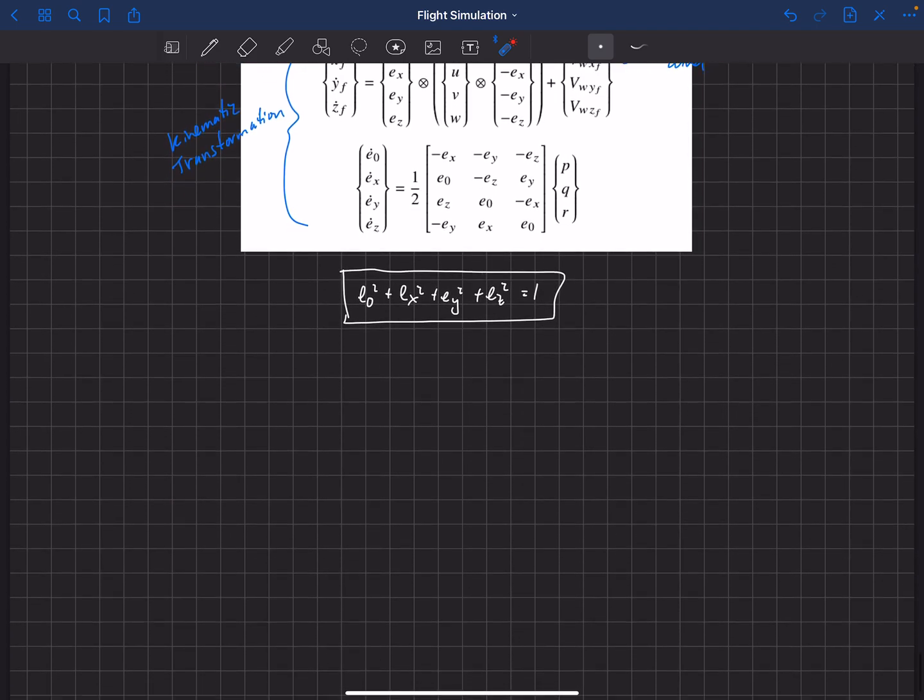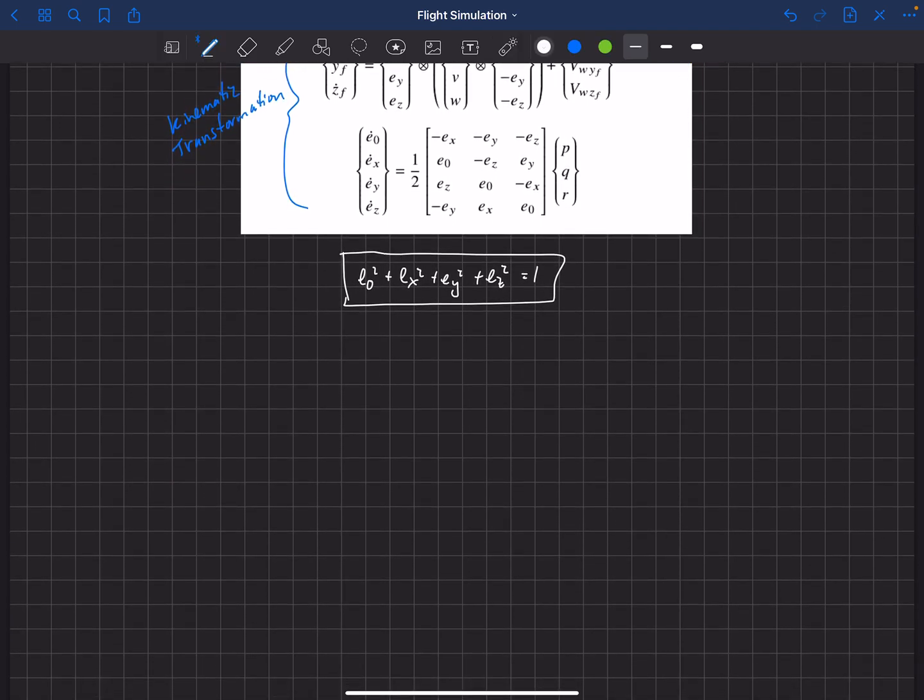And in fact, by using those other formulations, you pay a penalty. So for example, the direction cosine formulation requires about two times, if not more, more computation than the quaternion formulation. And because you're integrating, remember you have nine components of this direction cosine matrix that you're integrating forward in time, instead of the four components of the quaternion.